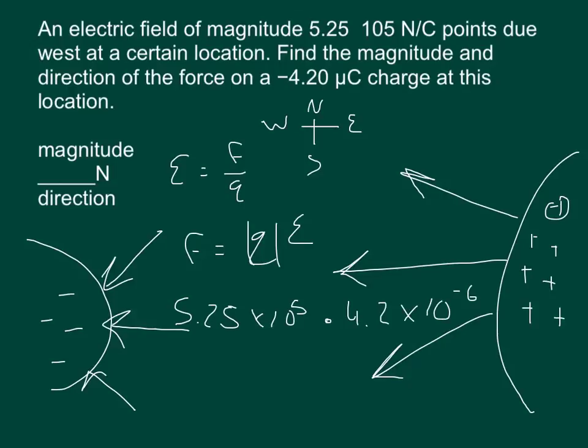If you do this the easy way, the 4.2 times 5.25, you get 22.05, and then you add your exponents and you get times 10 to the negative 1. So all you've got to do is move your decimal over and your answer is 2.205 Newtons.